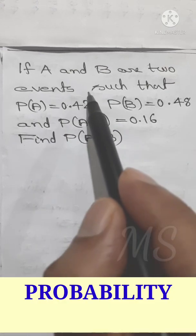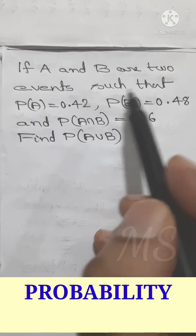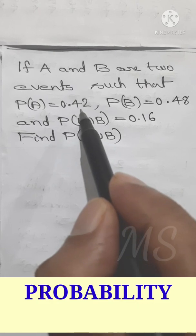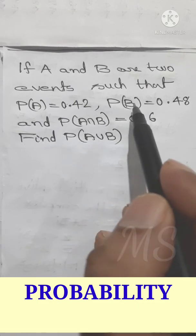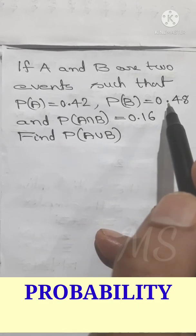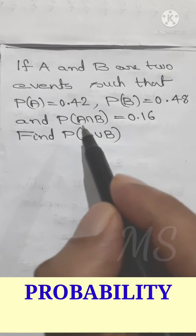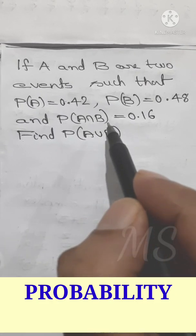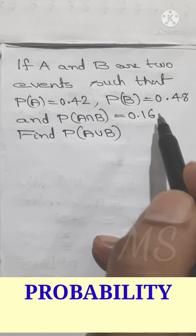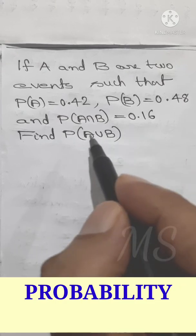If A and B are two events such that P of A equal to 0.42, P of B equal to 0.48, and P of A intersection B equal to 0.16,